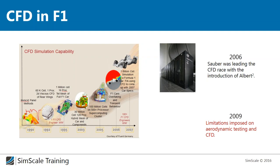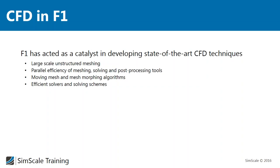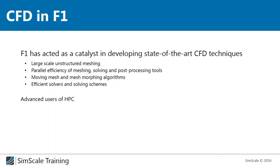In 2009, they agreed to put limitations on CFD simulations, restricting the number of teraflops teams could use. Still, Formula One has really acted as a catalyst in developing CFD methodology and new tools — they were early adopters pushing software and hardware vendors very hard. Looking at the Top 500 list of the fastest supercomputers in the world, with performance on a logarithmic scale going from megaflops to petaflops, F1 teams were well on the top 500 list about 10 years ago. After the restrictions, they fell off somewhat, but they continue pushing technology, becoming advanced users of high-performance computing early on.